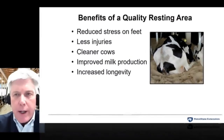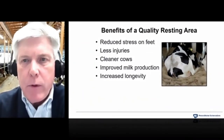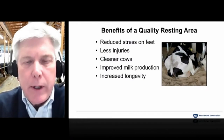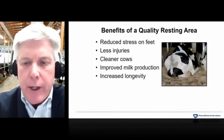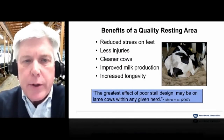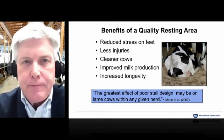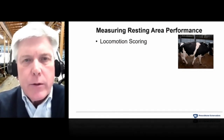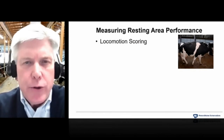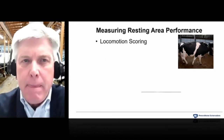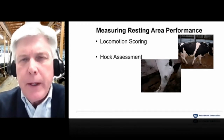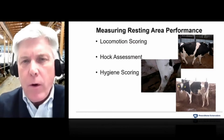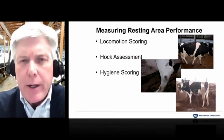There are many benefits to providing a quality resting area: reduced stress on feet which reduces lameness, fewer injuries, cleaner cows, improved milk production, and increased longevity. Measuring resting area performance is done in several ways — locomotion scoring indicates how well stalls are being used or if there's reluctance to use them, hock assessments indicate the condition of the stall bed and bedding practices, and hygiene scoring indicates how stall beds and alley cleaning are managed.